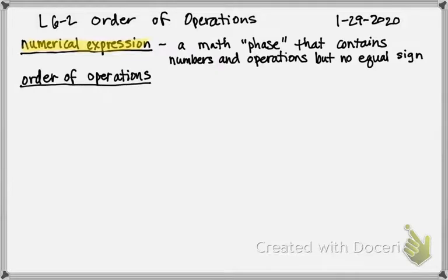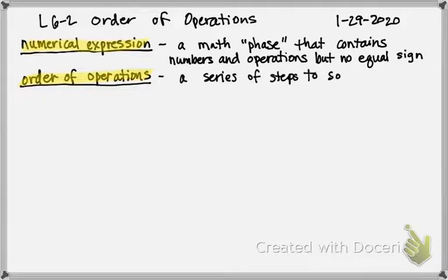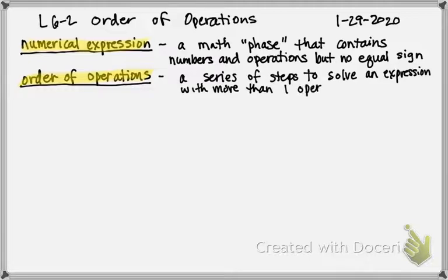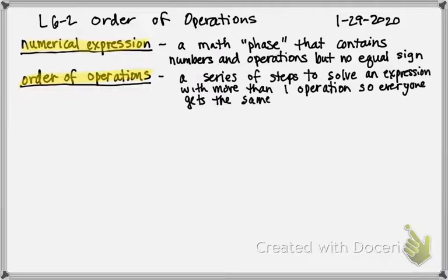I know you guys have studied this, but you may not have studied all the parts that make up the whole. Most of you know the little mnemonic device. Order of operations is a series of steps to solve an expression — like a numerical expression with more than one operation. Because if it's only one operation, you kind of know what to do. Two plus three? I add, right? So everyone gets the same answer — and I mean the entire world. This was developed so that people in America could come up with the same answer as people in Germany, so that we would all come up with the same answer.